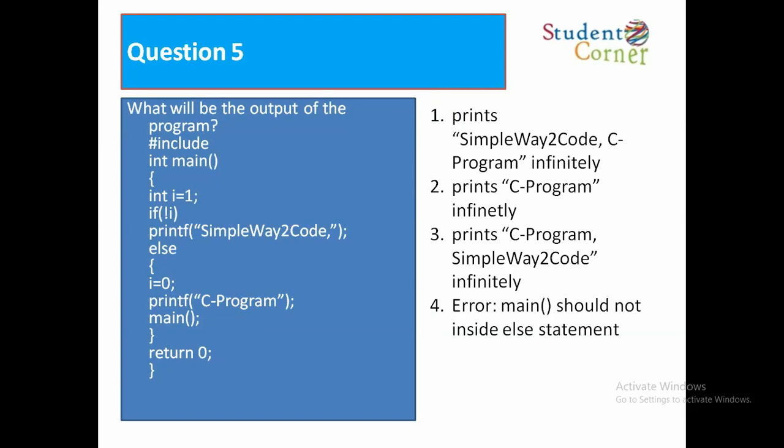Question number 5: What will be the output of this program? Hash include int main, int i is equal to 1, if not equal to i, printf simple way to code, else, i is equal to 0, printf C program, main, return. Option 1: prints simple way to code, C program infinitely.